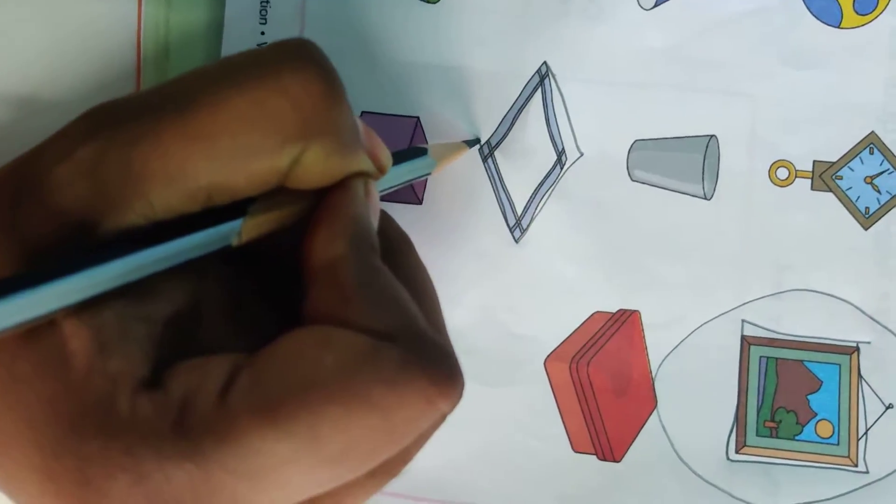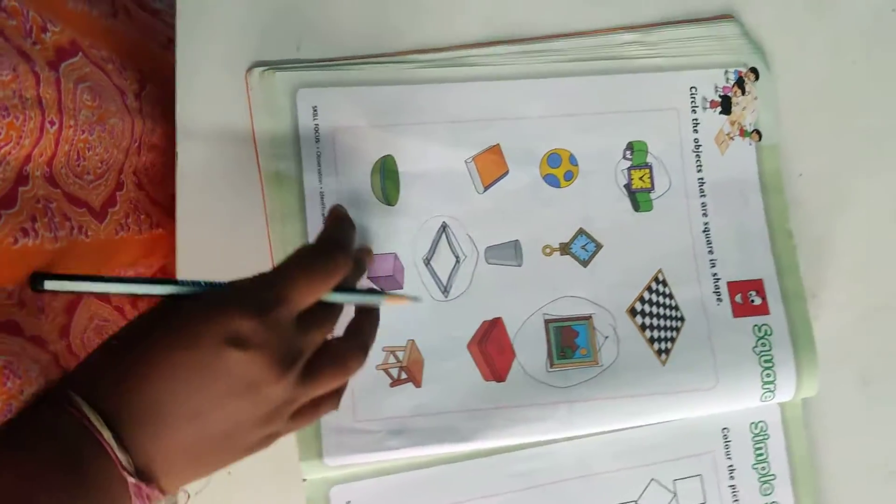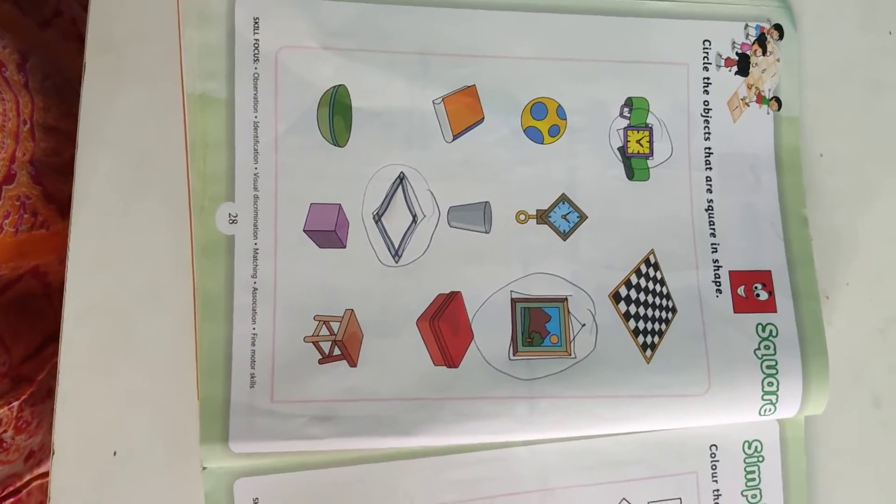So you have to see what are there in square. And you have to circle it. Reminding objects.